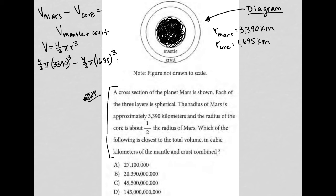So, let's do that. I'm going to multiply. So, I have 3390 cubed times four-thirds, and I'm multiplying that by pi. And what I get is 163,187,806,143.